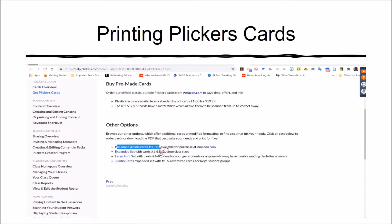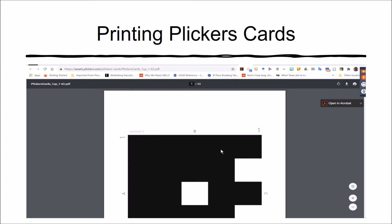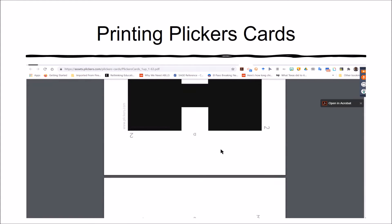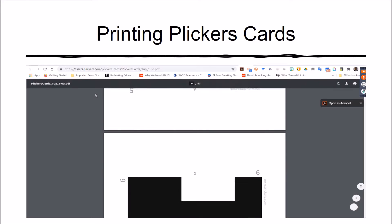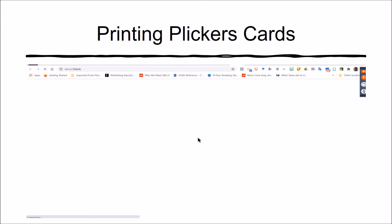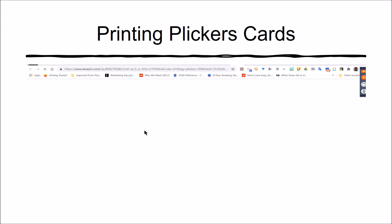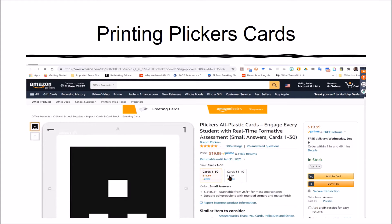Other options include 1 through 63 as an expanded set, a large font set, and jumbo cards numbered 1 through 63 for large student groups — those jumbo cards are much larger. These cards can be printed on one sheet of paper and laminated to protect them. Or if you want to save time and effort, Amazon sells the cards laminated and ready to use for Clickers — a set of 40 for $25.